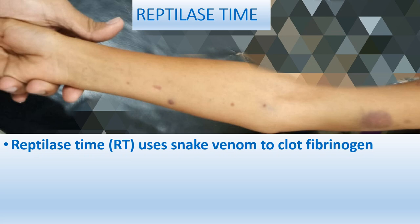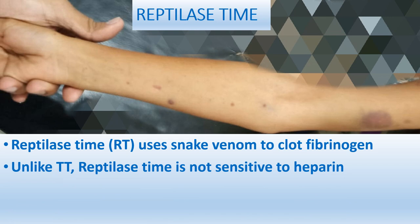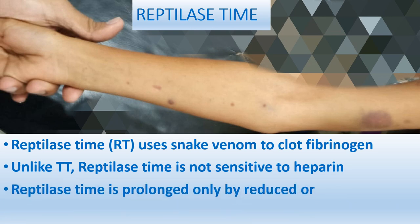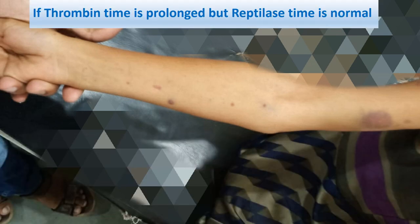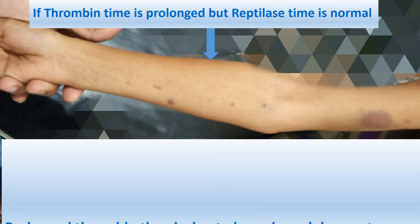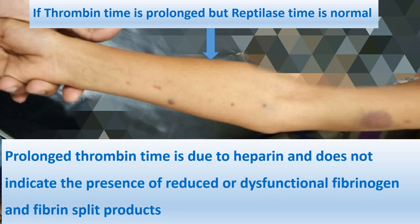Reptilase time uses snake venom to clot fibrinogen. Unlike thrombin time, reptilase time is not sensitive to heparin and is prolonged only by reduced or dysfunctional fibrinogen or fibrin split products. It is not altered by heparin. Therefore, if TT is prolonged but reptilase time is normal, it is due to heparin — it does not indicate reduced or dysfunctional fibrinogen.